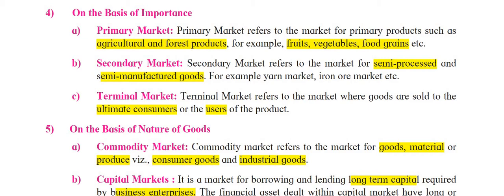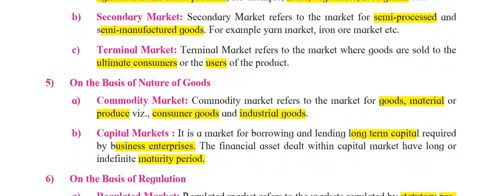Third and last under this classification is terminal market. Terminal market refers to the market where goods are sold to the ultimate consumers or users of the product. There is a direct connection with the consumer — goods are sold directly to the ultimate final consumer who actually uses the products. These are the classifications of markets on the basis of importance.